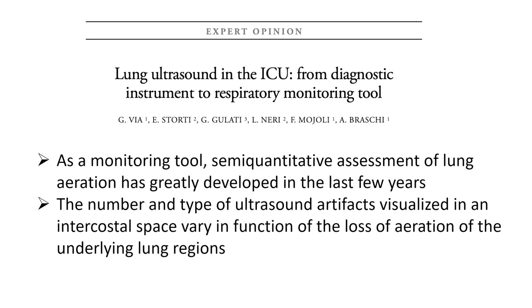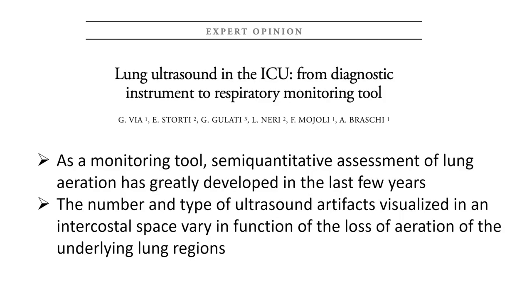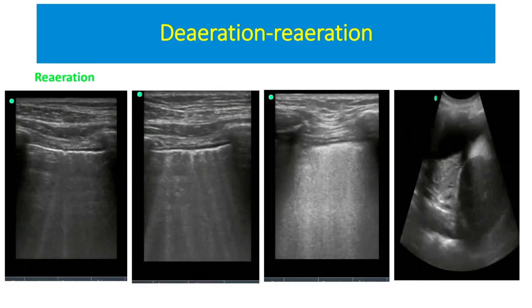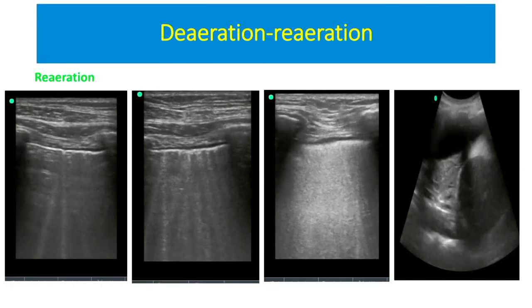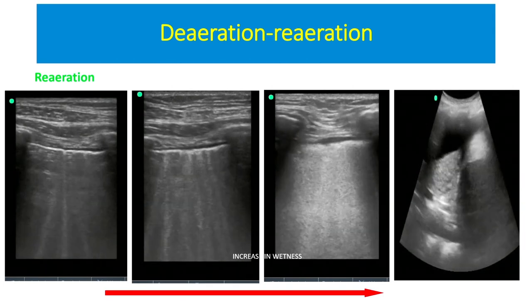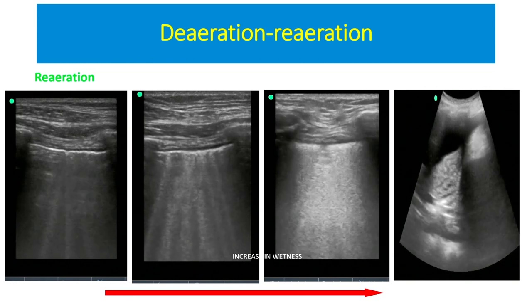How we do this is basically through a semi-quantitative assessment. What is the amount of de-aeration? If we can attach a number to it, we can follow up a problem over a period of time. A progressive change from one pattern to another will be associated with progressive de-aeration — change from predominantly horizontal lines to more vertical lines is obviously a progressively worsening de-aeration pattern.